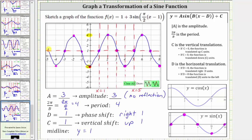To graph this using the graphing tools, because we have a sine function, I would click on this graphing tool here. Once we click on this, we simply click on a point on the midline and a maximum or a minimum. So for example, if we clicked on this point here and then this point, we would have an accurate graph over the entire interval. I hope you found this helpful.